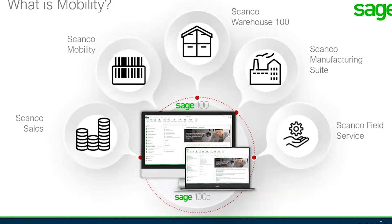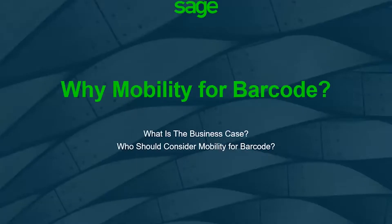So the full Mobility suite takes things fully mobile. The first two pieces — ScanCo Sales and ScanCo Mobility — are standard with that purchase. From there it extends into warehouse automation, manufacturing automation, and full functional field service capabilities. We like building blocks: the Barcode module is the first block, and then depending on where the pain points and value are, we add in different pieces to fulfill your need and provide value.